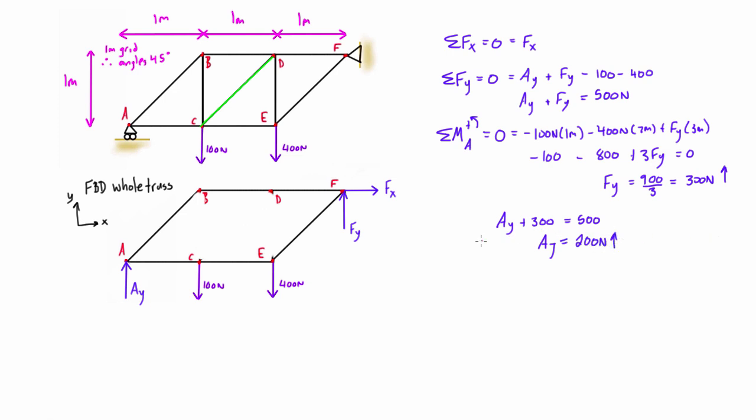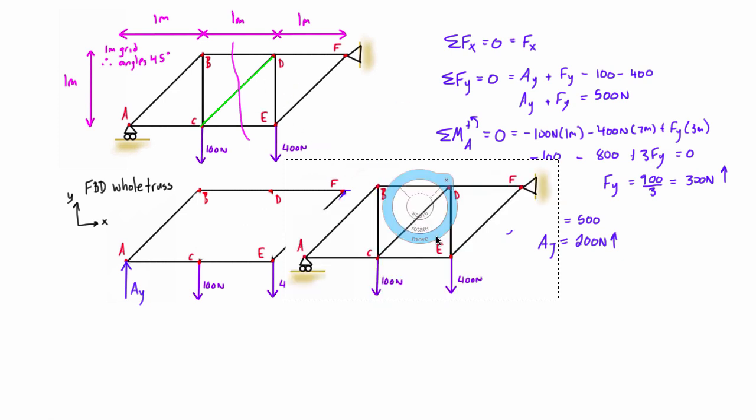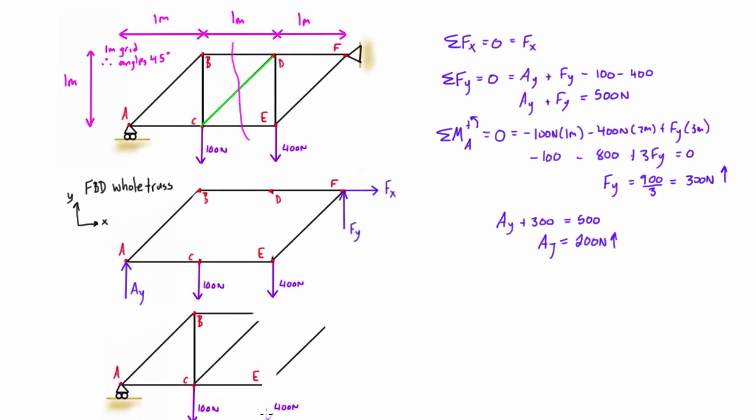Now to solve for CD, we do part two of the problem. We pass a section through our truss, which is basically a virtual cut cutting the truss into two completely separate parts. We have to make sure our cut passes through the member we're looking for and only passes through a maximum of three members, because we can't solve for more than three unknowns. I'm going to pass our section through like this and draw a free body diagram using the left side of the truss.